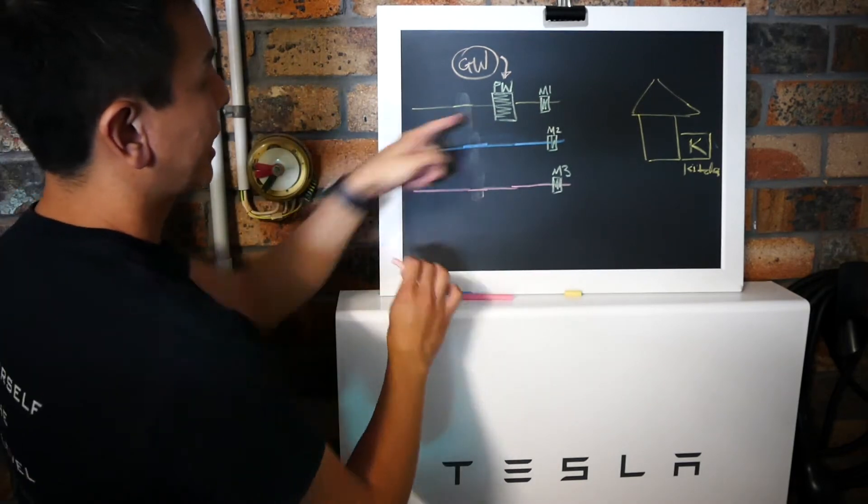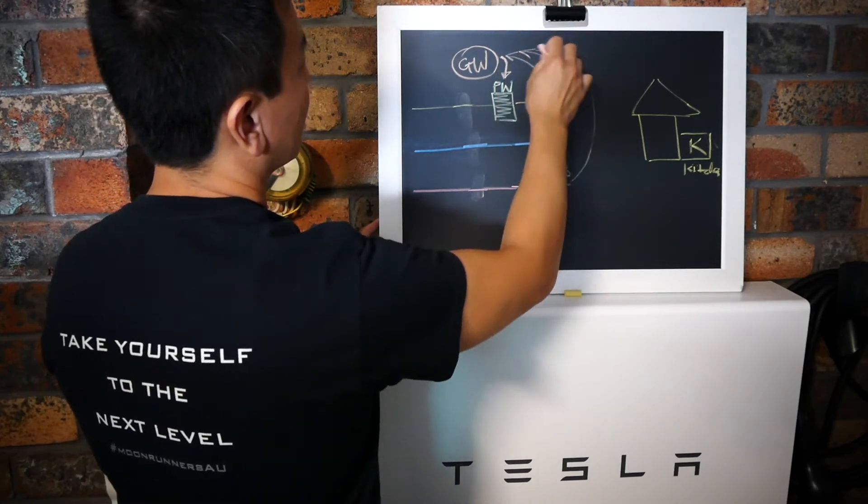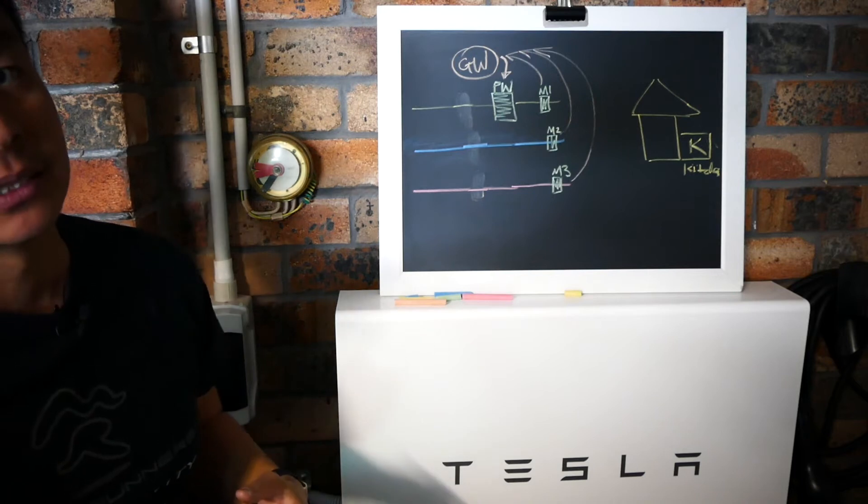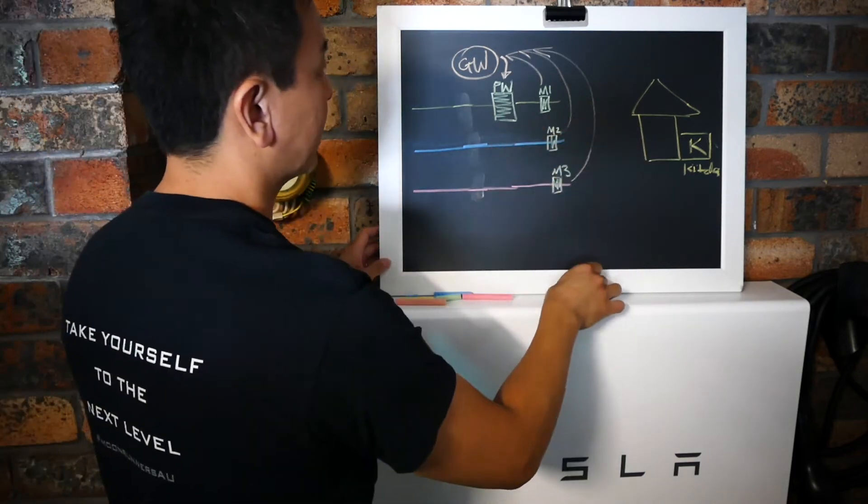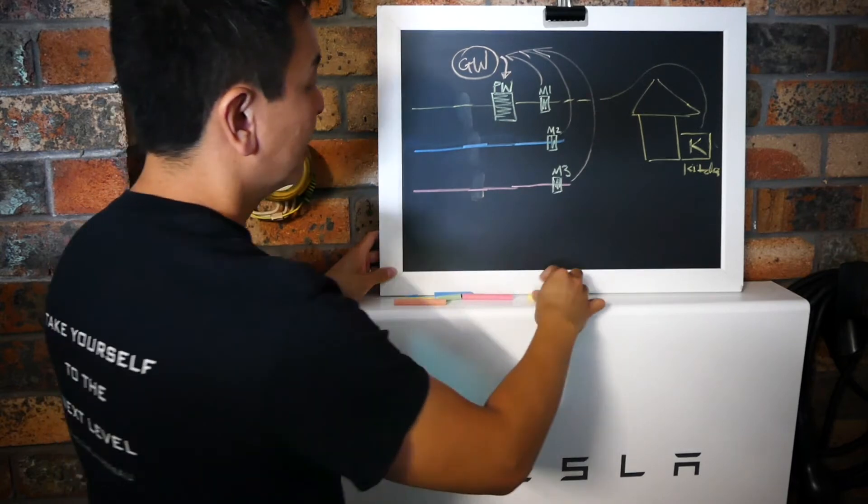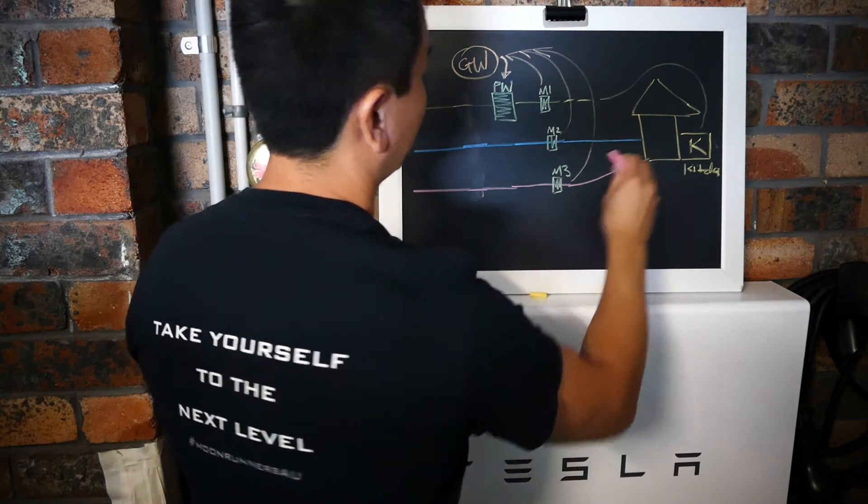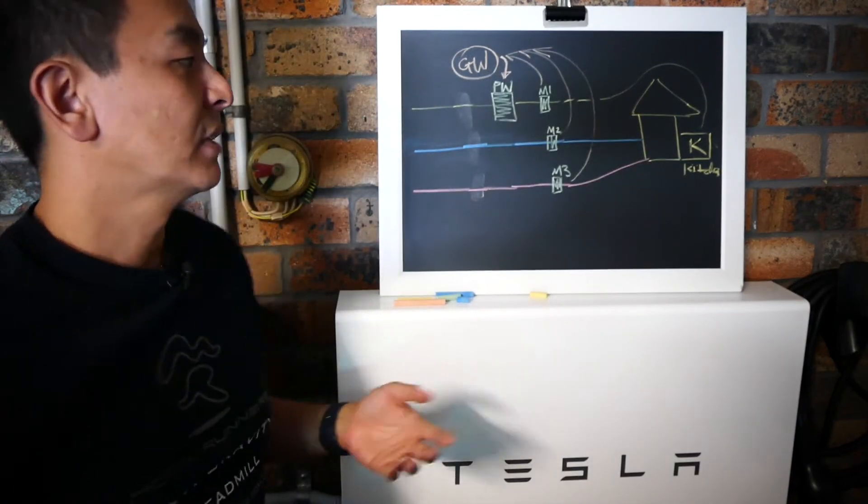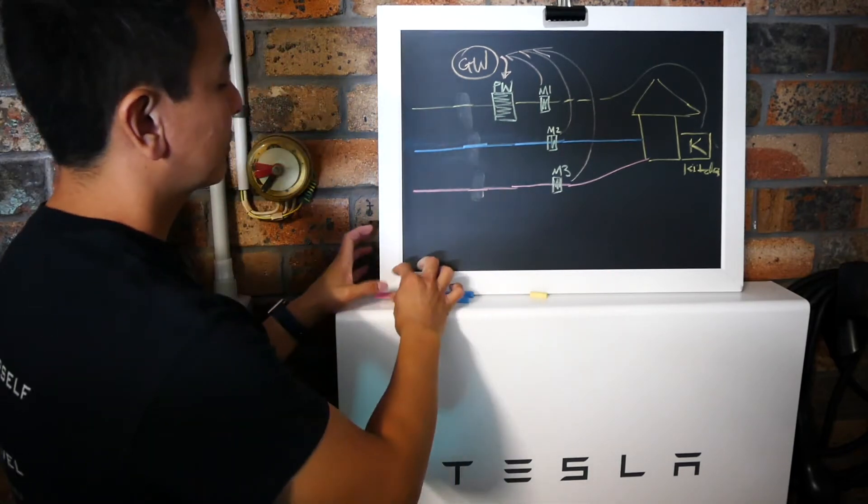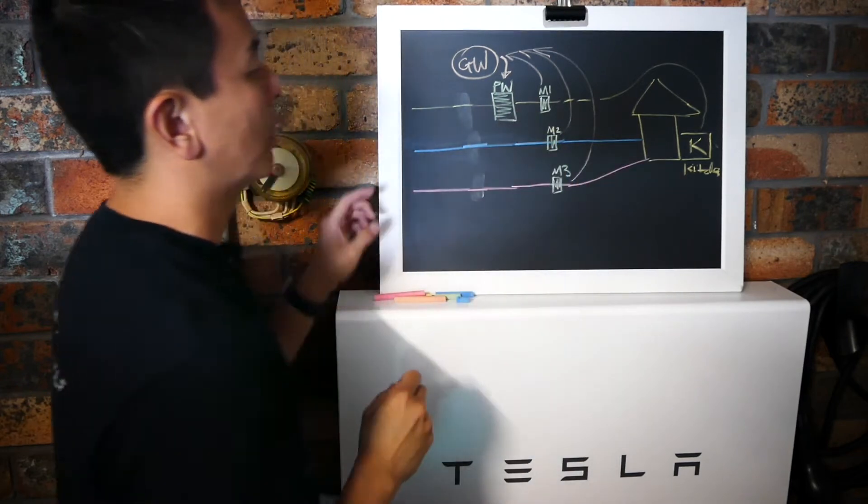So like I said before the Powerwall 2 only supplies across one phase because it's a single phase unit. The Gateway 2 has meters that tells it how much electricity is being used currently in the house. So the Powerwall normally best practice is hooked to your essential kitchen appliances. That's where most of the Powerwall supply. The rest of the house is supplied by the other two phases generally speaking. That's usually the best practice. Upstairs, air conditioning, the pool if you've got a pool pump, your computers, your fans, all those kind of things. In a normal situation, so the kitchen will be supplied by the Powerwall when it discharges.